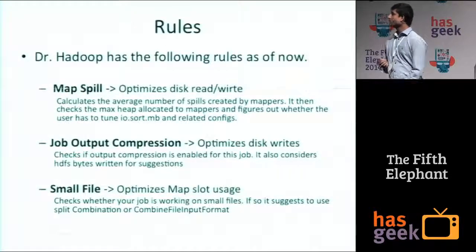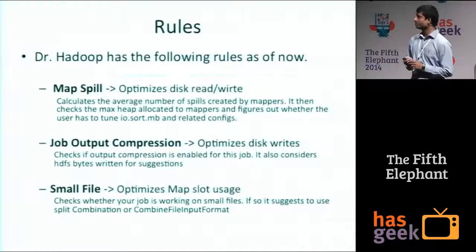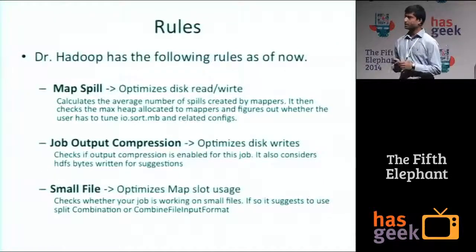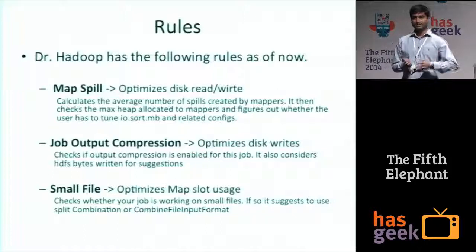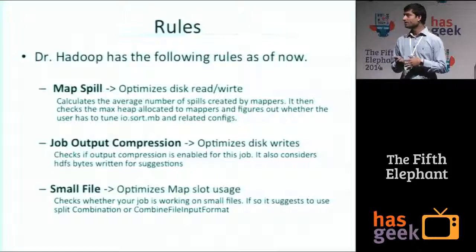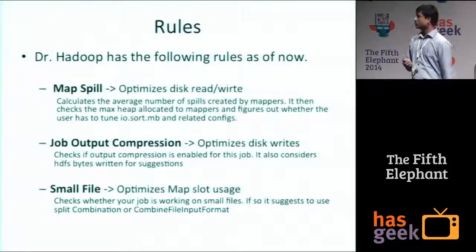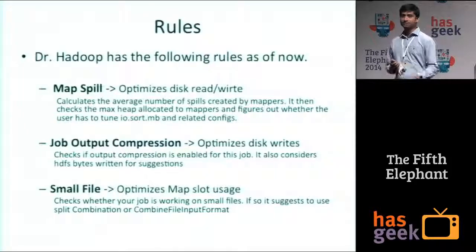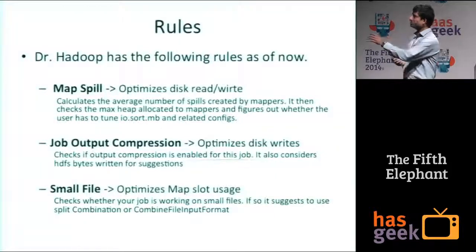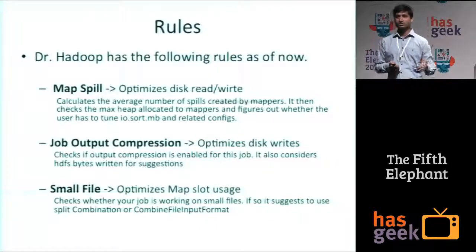The next rule is job output compression. This is recommended for every job. It checks how much data your job is writing to HDFS, and if it goes beyond a certain limit, you should be enabling output compression — it is a must for any job writing data. It checks the configurations you set in your job, and if compression is false, it tells you to enable it.